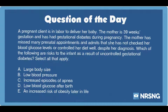Uncontrolled gestational diabetes can cause many complications for both the pregnant mother and the unborn child. Gestational diabetes results in an increased risk of infant macrosomia or large body size. The infant may also have hypoglycemia after birth when he is no longer connected to the mother's blood supply. Finally, infants born to mothers with gestational diabetes are at greater risk of developing obesity later in life.